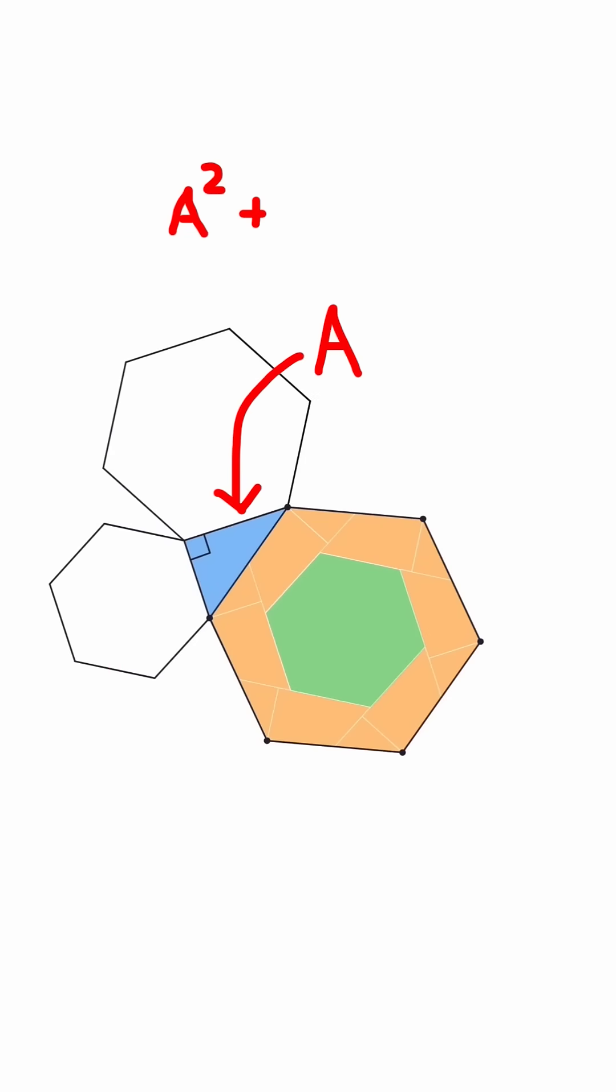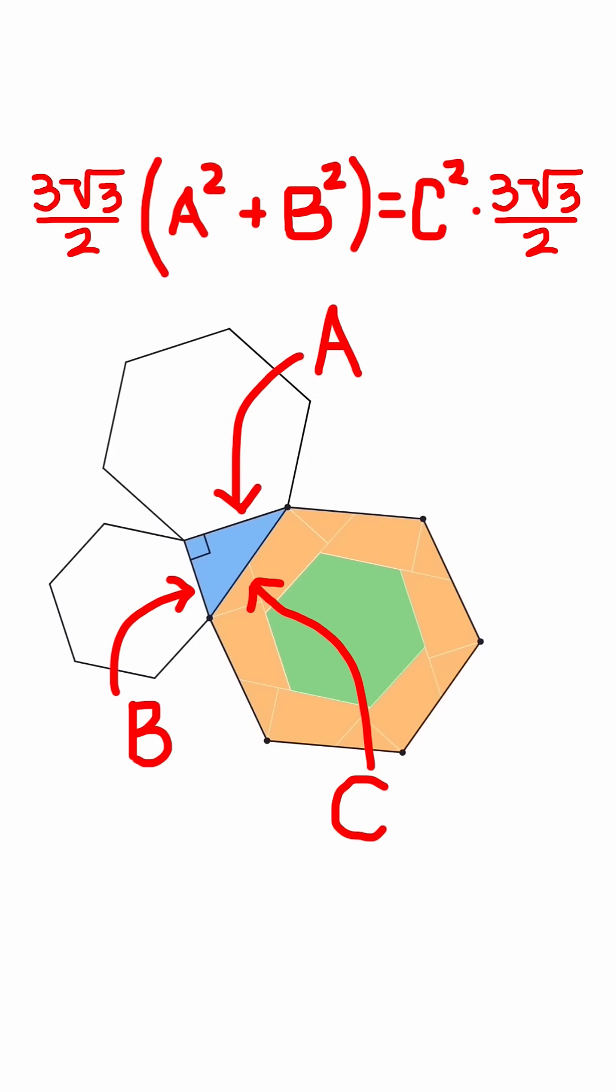This is just a squared plus b squared equals c squared, with each side of the equation multiplied by half of 3 times the square root of 3, because of the area formula for a regular hexagon.